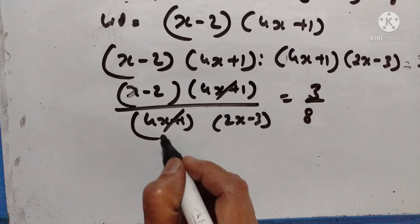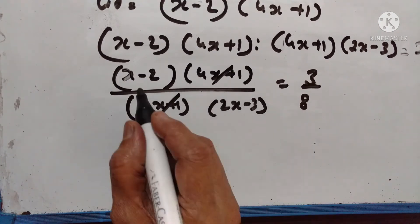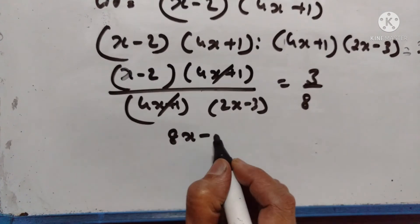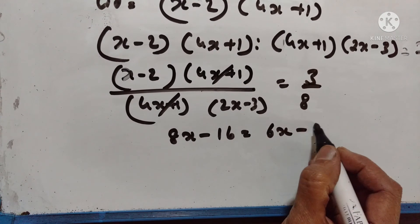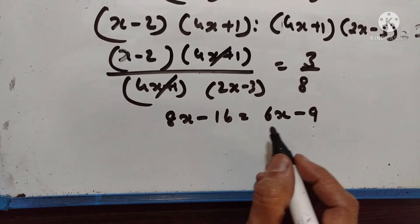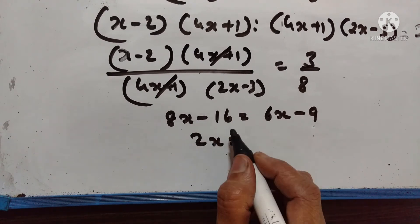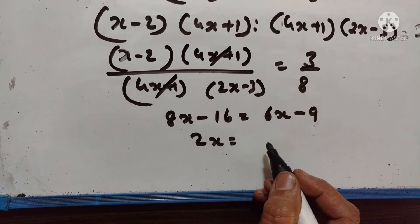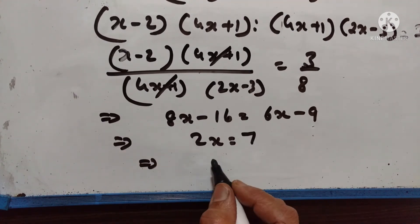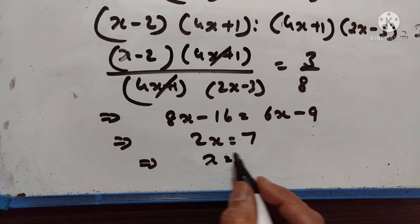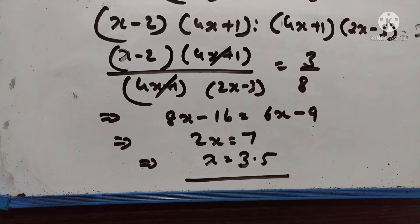Cross multiplying: 8 into x minus 2 gives 8x minus 16, equal to 3 into 2x minus 3, which is 6x minus 9. So 8x minus 6x is 2x, and minus 16 becomes plus 16 on the other side. 16 minus 9 is 7. So x is equal to 7 divided by 2, that is 3.5.